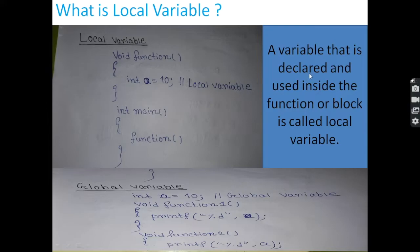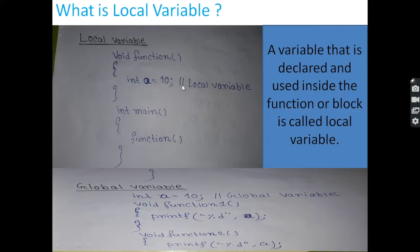A variable that is declared and used inside the function or block is called a local variable. The local variable's scope is limited to the function or block — it cannot be used outside the function. It is always used inside the function, not outside.